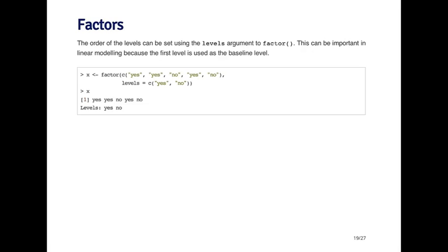For example, if I create a factor variable with the elements yes and no, then the baseline level will be the first level that's encountered. And because no comes before yes in the alphabet, then no will be the baseline level and yes will be the second level.